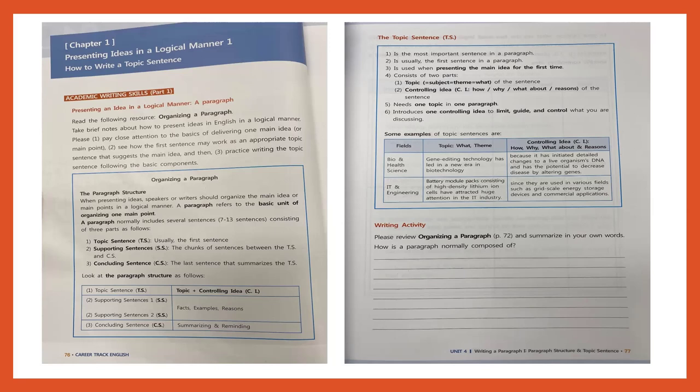Point number five: you need one topic in one paragraph. And number six: the controlling idea helps the reader understand the limit, guide, and control of what you are discussing.